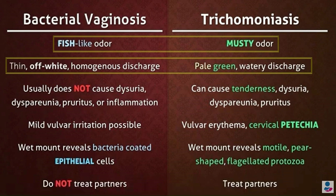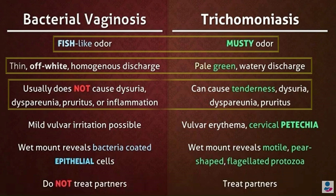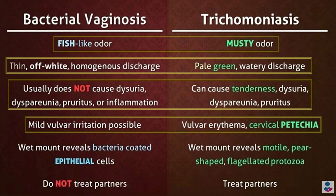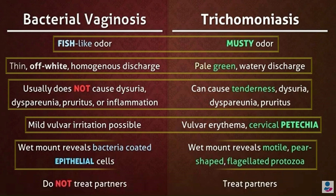Bacterial vaginosis usually does not cause dysuria, dyspareunia, pruritus, or inflammation, whereas trichomoniasis can cause tenderness, dysuria, dyspareunia, and pruritus. In bacterial vaginosis there is mild vulval irritation, whereas there is vulval erythema and cervical petchiae in trichomoniasis.